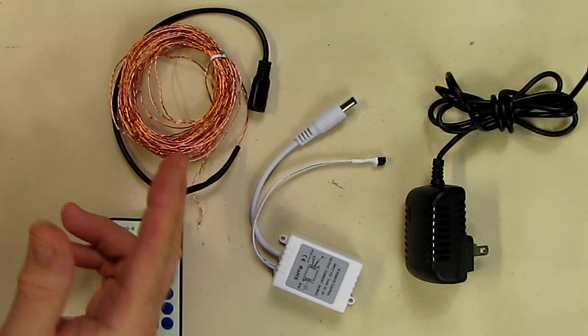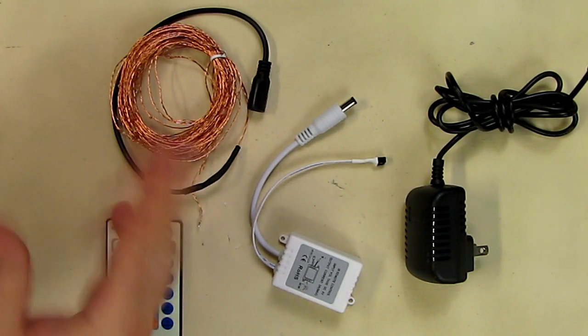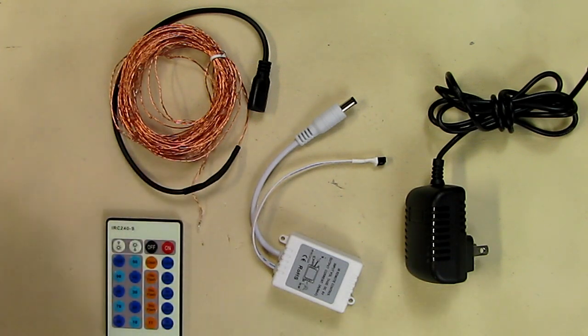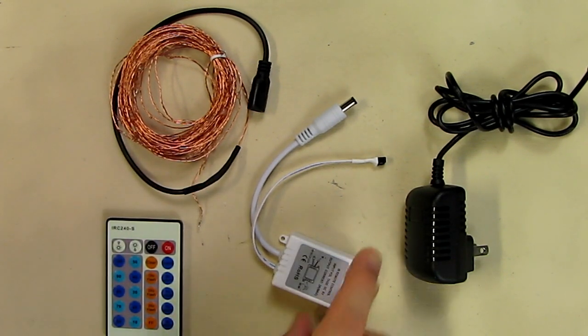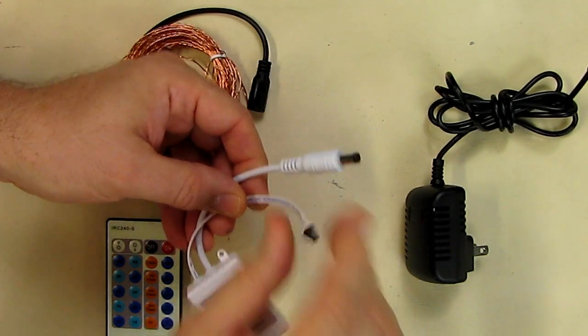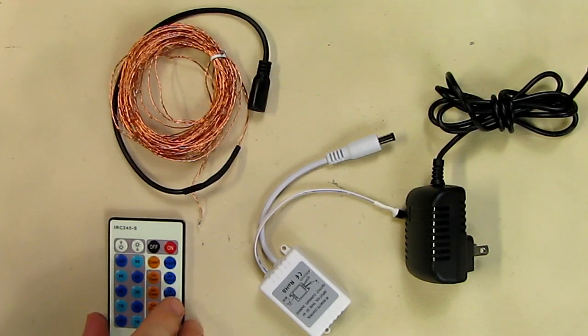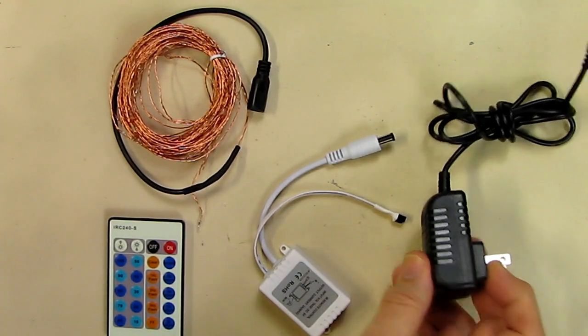You get the controller which has an infrared sensor that picks up signals from the little remote, and you get an AC to DC converter adapter with a USA plug—I think it's a six-volt adapter.